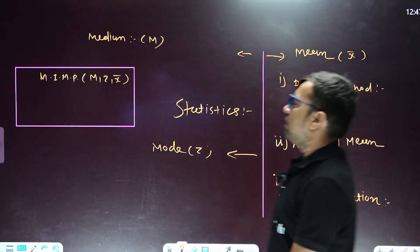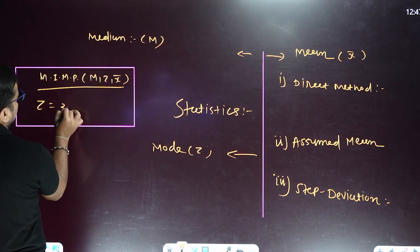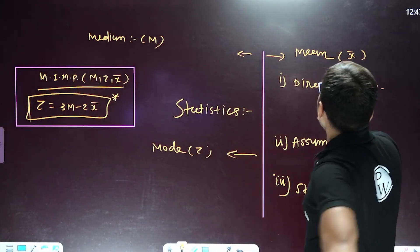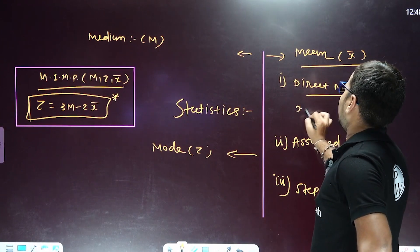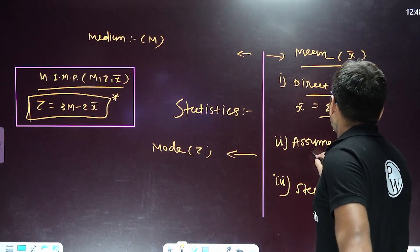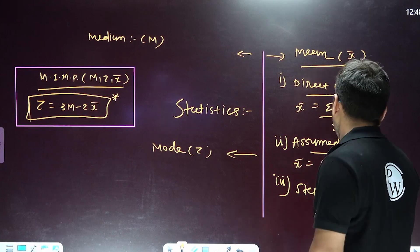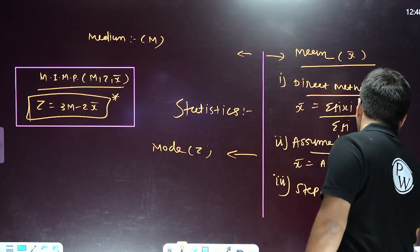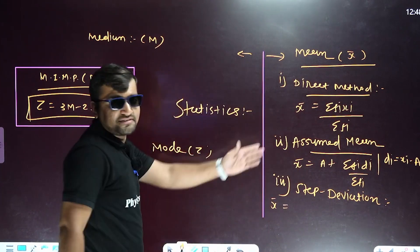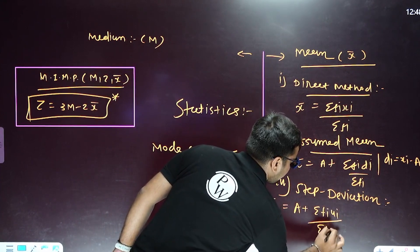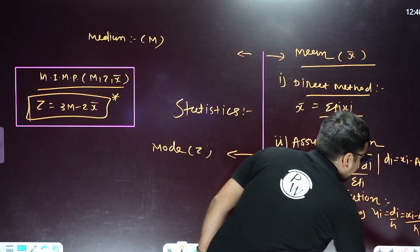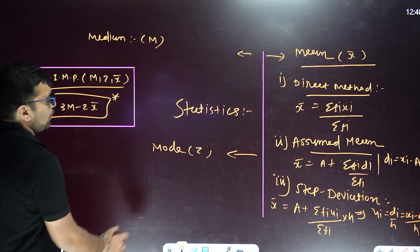Chapter 13: Statistics. The relationship between mean, median, and mode is: Mode equals 3 times Median minus 2 times Mean, i.e., z = 3m − 2x̄. Mean by the direct method: x̄ = Σfi·xi / Σfi. By the assumed mean method: x̄ = A + Σfi·di / Σfi, where di = xi − A. By the step deviation method: x̄ = A + (Σfi·ui / Σfi) × h, where ui = (xi − A) / h and h is the class length.